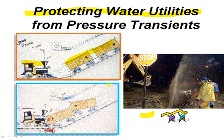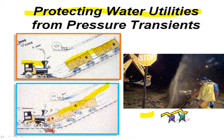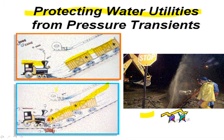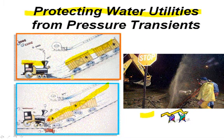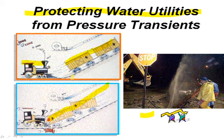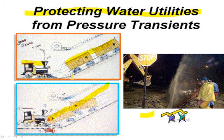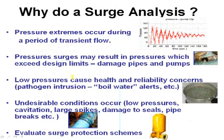Here's the train coming back and causing a big pressure spike at the pump. This is a serious problem that we have to be very careful to avoid. So why do we need to do a surge analysis for a water utility? The extremes always occur during transients.